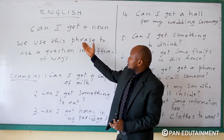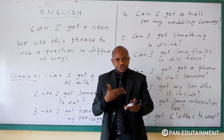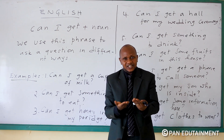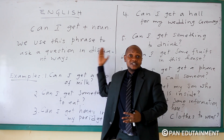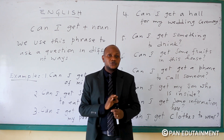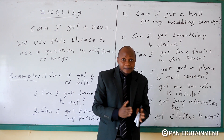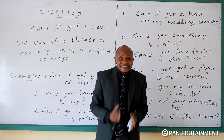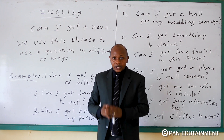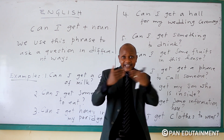Then we are going to teach you the use of 'Can I get' plus a noun. We use this phrase to ask a question in different ways. My friend, don't say 'a question' wrong — we say 'a question.' When you are asking a question in different ways, you are going to use 'Can I get.' Can I get my money?